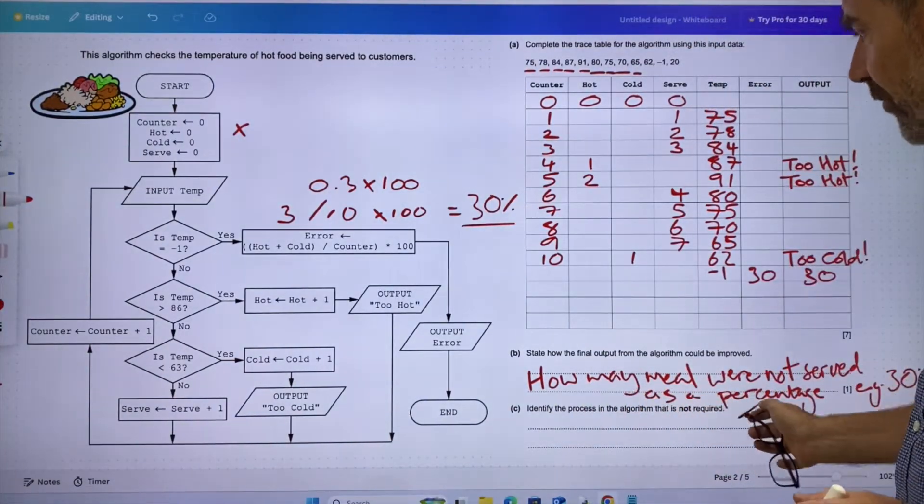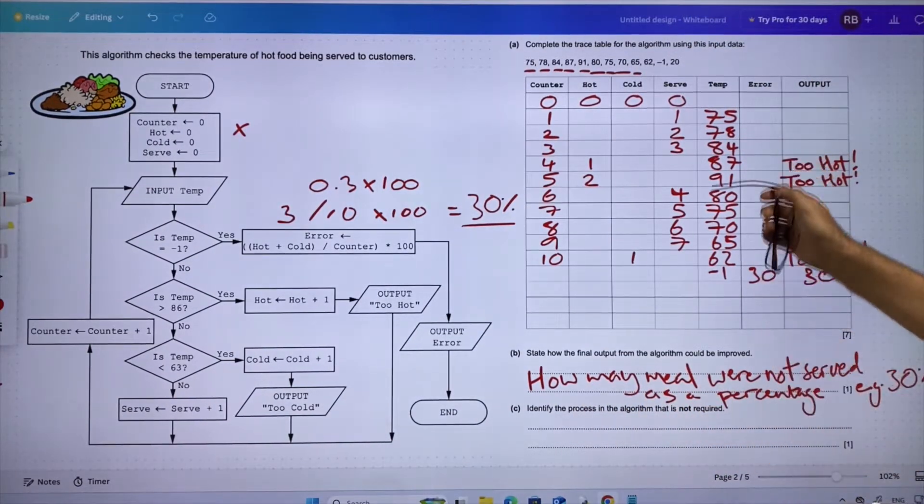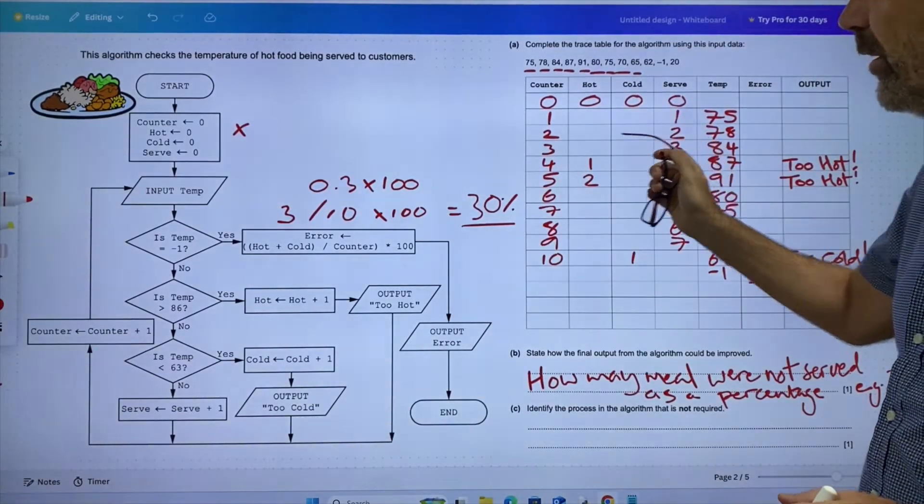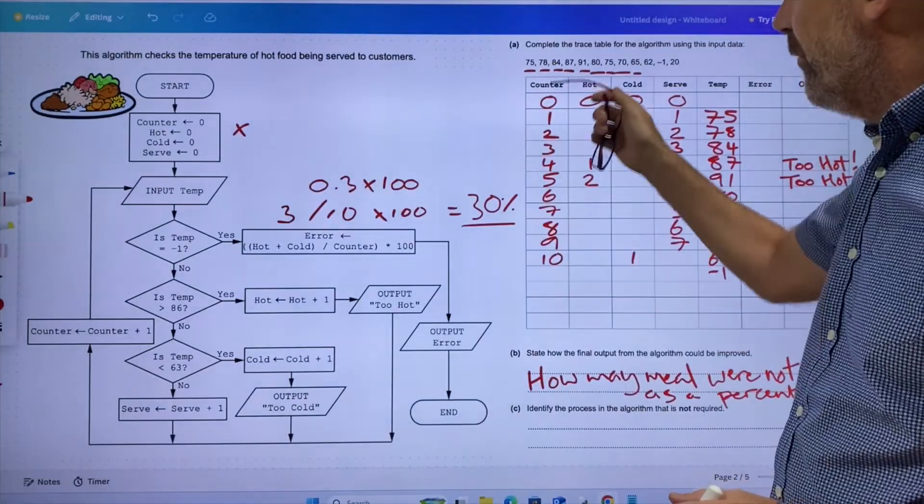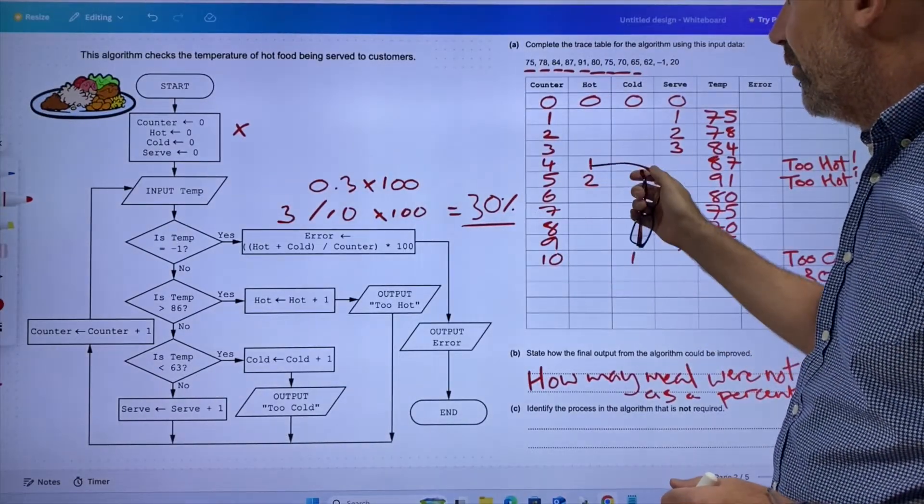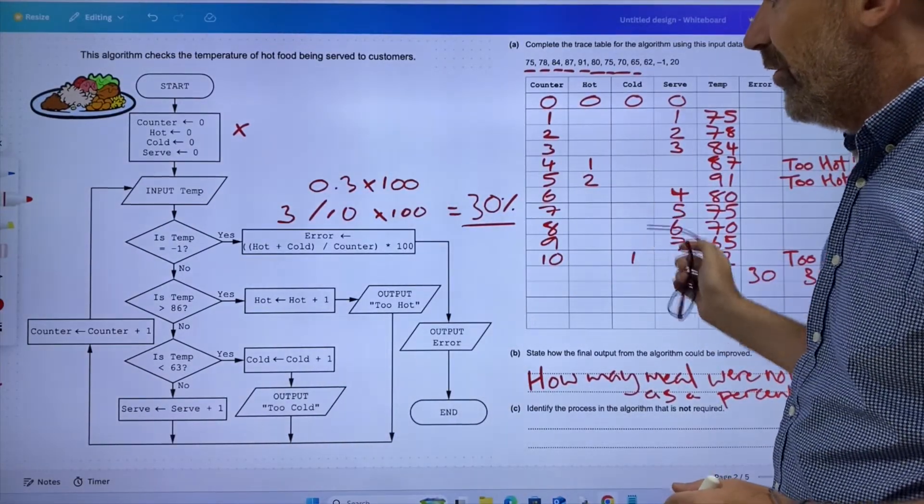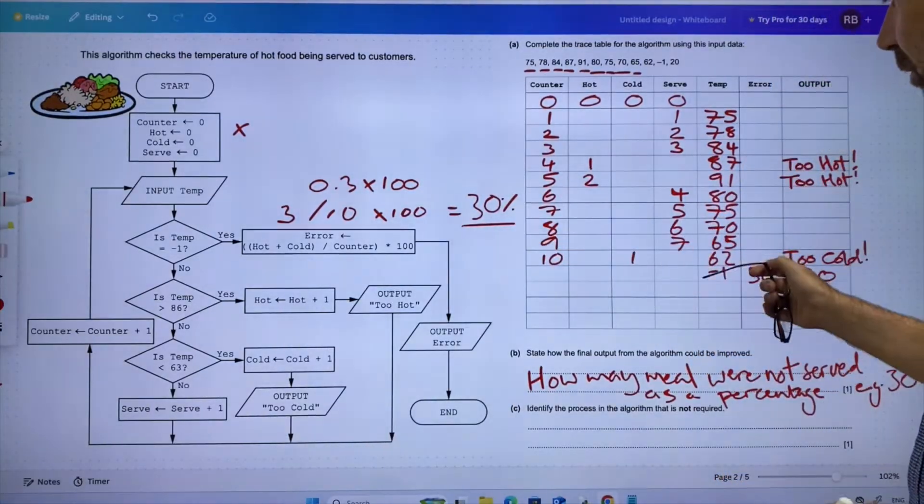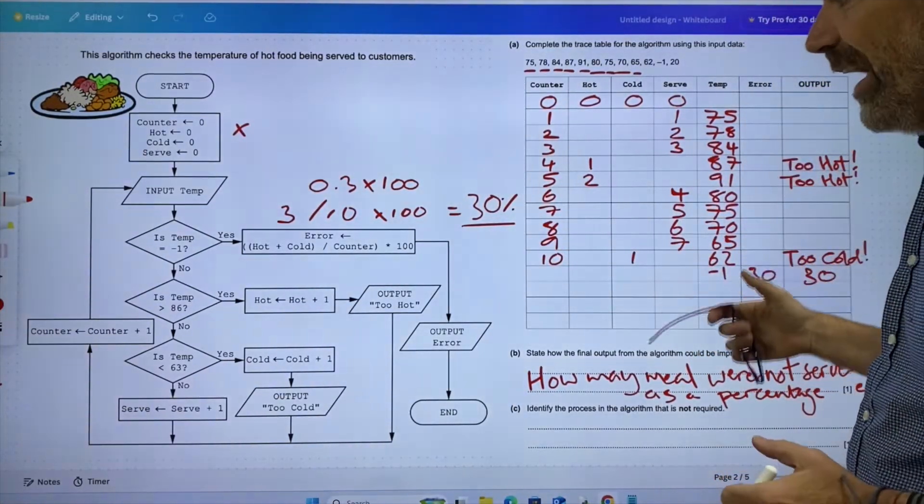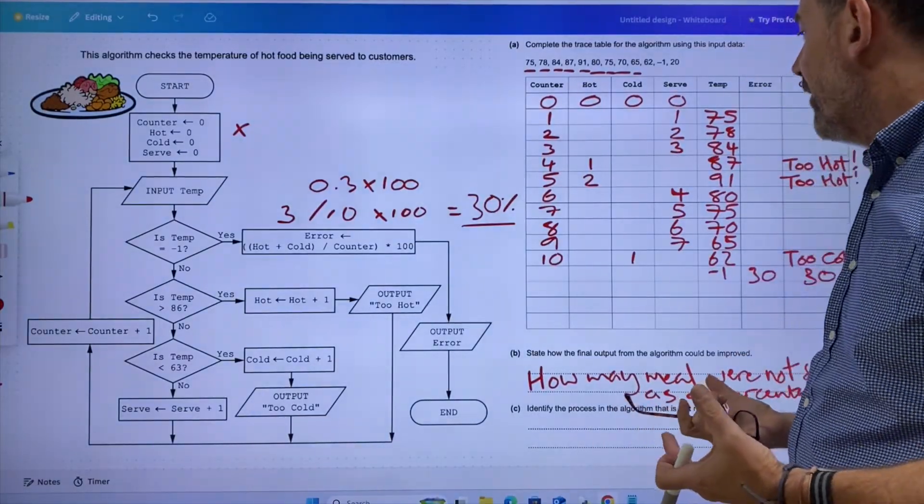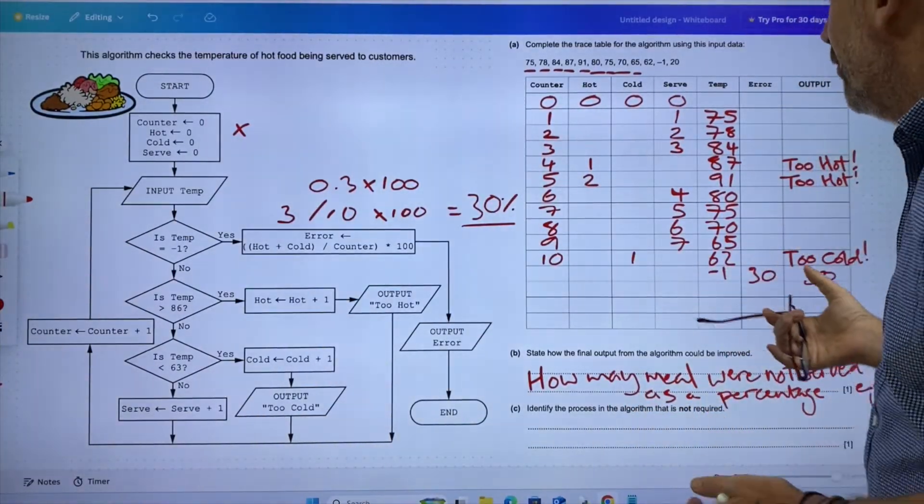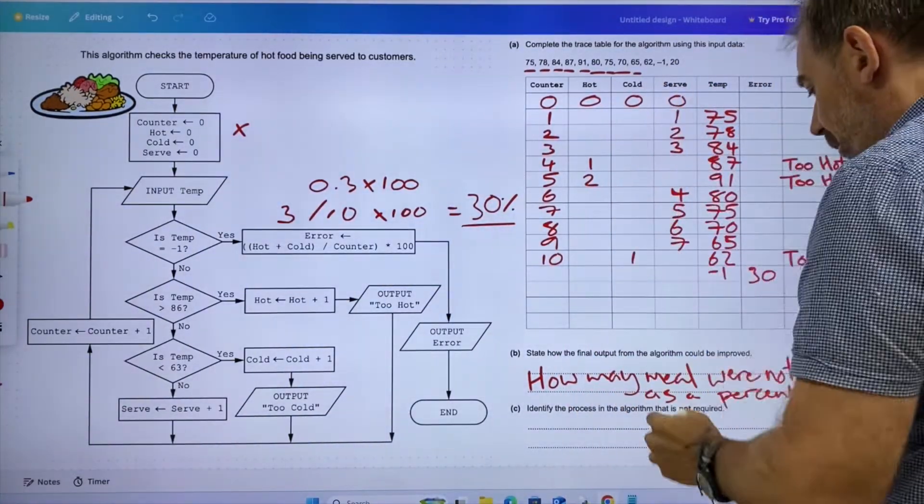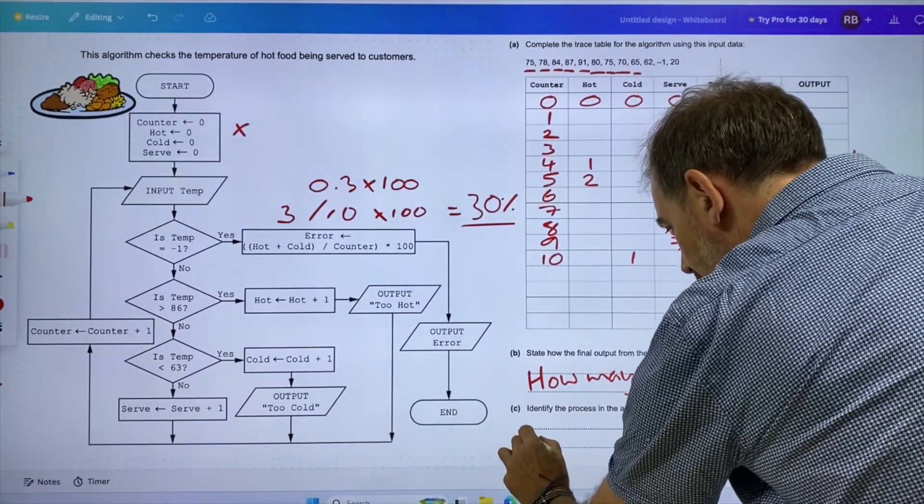And then it says, identify the process in the algorithm that's not required. Well, because we're using hot and cold, and because we're using a percentage, we've put 10 items in here. We've discovered that three of the items were not served—30 percent. We know here that 70 percent of the items must have been served. So do we really need this? Do we really need this column here? I'm going to put: we do not need serve.